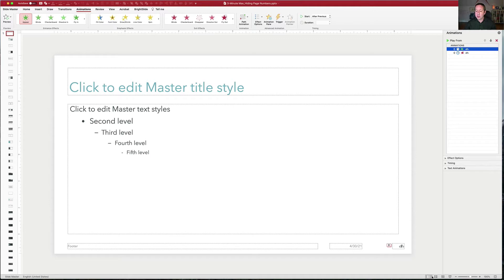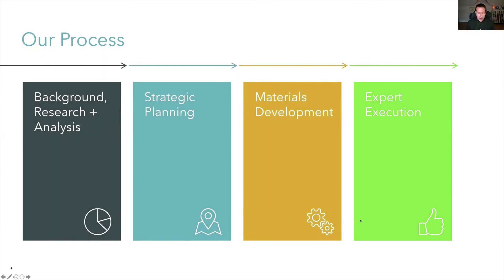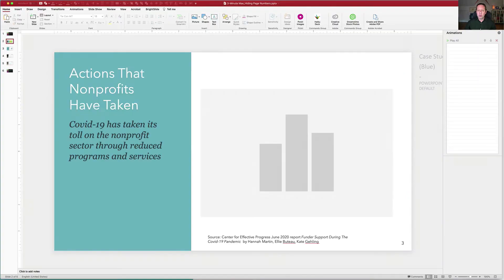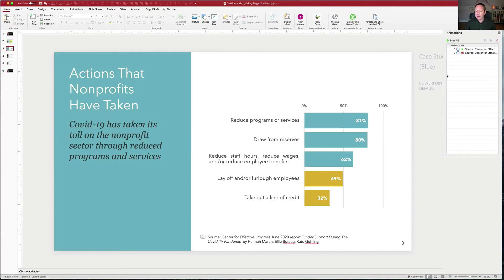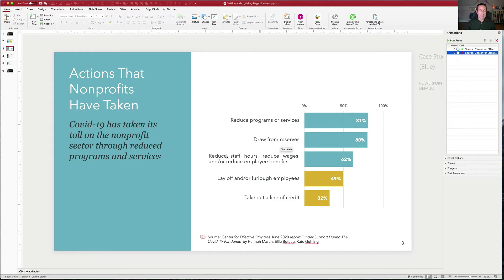So you can use this simply for page numbers, but you can use it for other content as well. For example, this slide also has a page number that's hidden, but it also has a source that I didn't really want to show on screen, but I wanted to have it in the handout and when we made the PDF. So I just took that text box and again, appear and disappear. It's the exact same thing. Really simple.